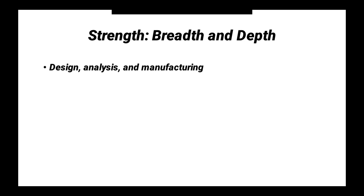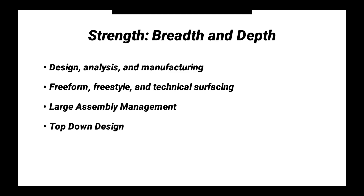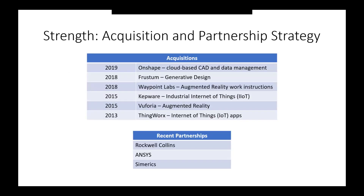First, strengths. I don't think any other CAD software compares to the breadth and depth of capabilities available in Creo Parametric. With Creo, you get industry-leading capabilities including design, analysis, and manufacturing all within the same platform — freeform, freestyle, and technical surfacing, large assembly management and top-down design, and the ability to drive your models with engineering calculations via MathCAD. The next strength is PTC's acquisition and partnership strategy. PTC acquired Frustum, an advanced generative design software company, and in April we'll get generative design powered by artificial intelligence in Creo Parametric 7.0. The cloud computing option in 7.0 will actually be powered by the Software as a Service, or SaaS, functionality from Onshape.